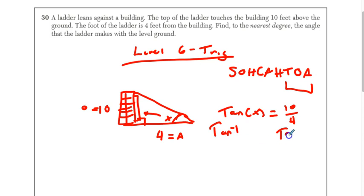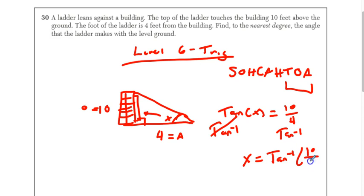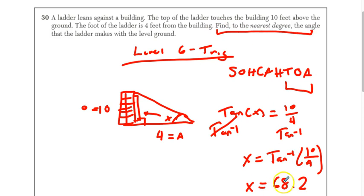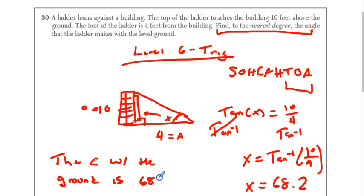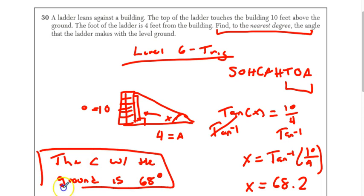To solve for the angle, we take the inverse tangent of both sides. So x = tan⁻¹(10/4). Putting that in the calculator, we get x ≈ 68.2 degrees. Since the problem asks to round to the nearest degree, the angle the ladder makes with the ground is 68 degrees. Notice how I included units. That's it for this video — peace out, don't forget to kiss your mama.